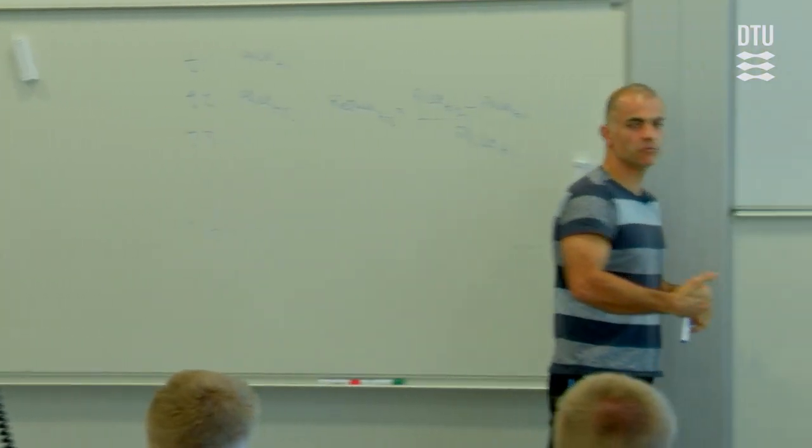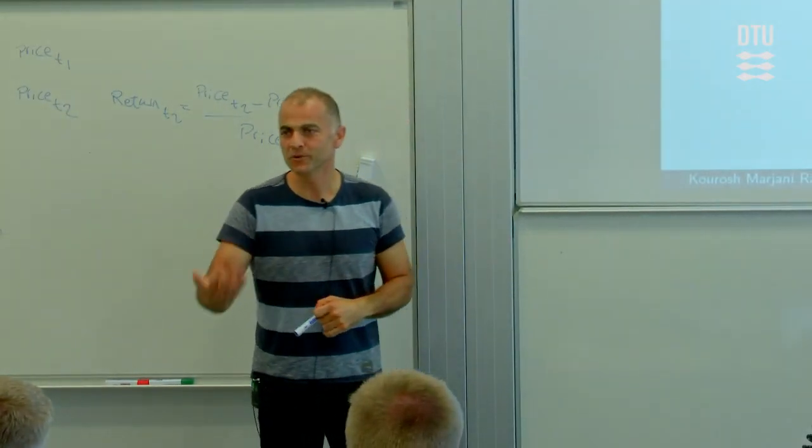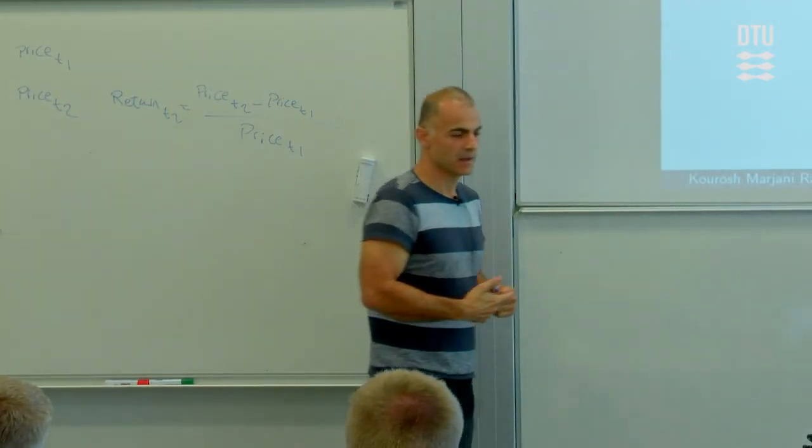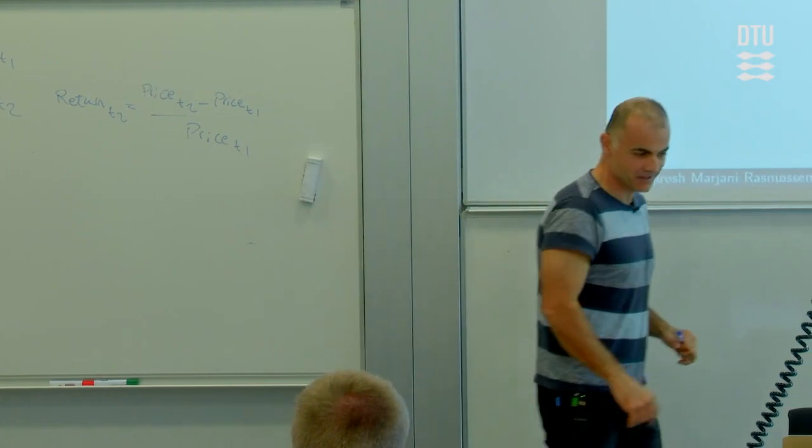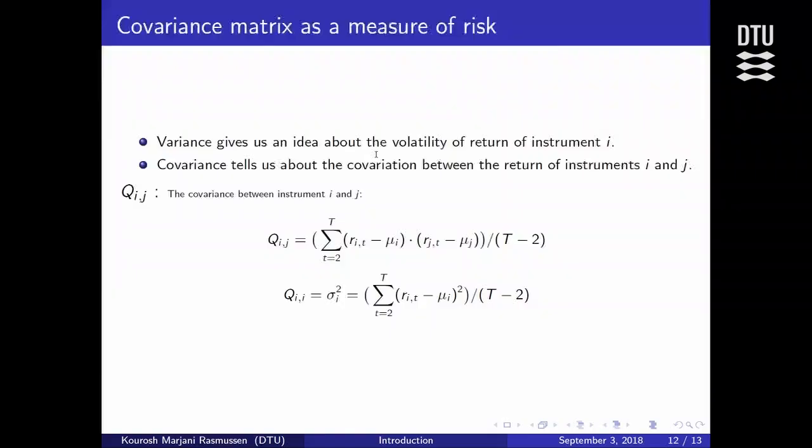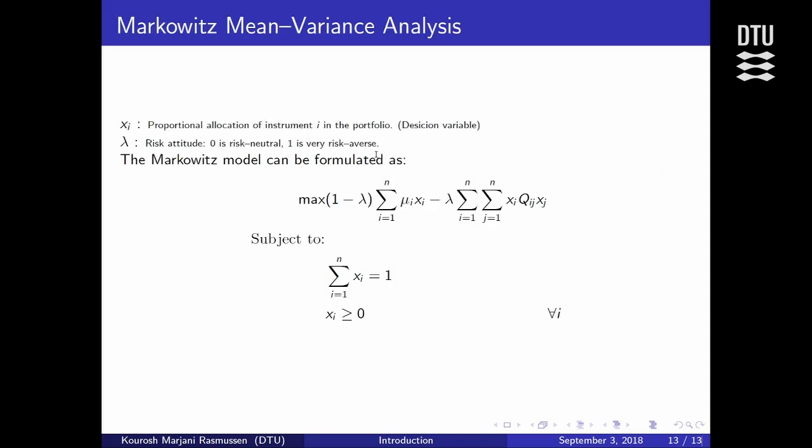All right? So all the risks that can be removed could be removed by using a method like this, given some assumptions. I'll get back to that as well. And of course, then we have a special case of a covariance is the variance where you have the covariance of the same asset with itself. And that would obviously be always a positive number.